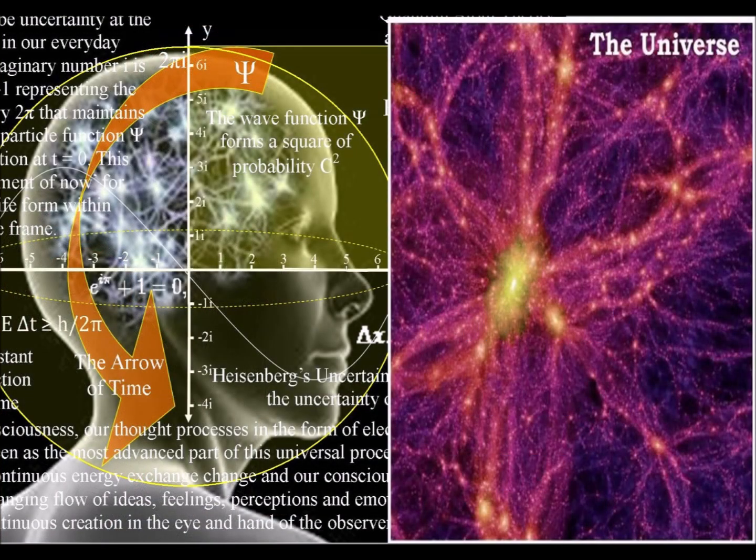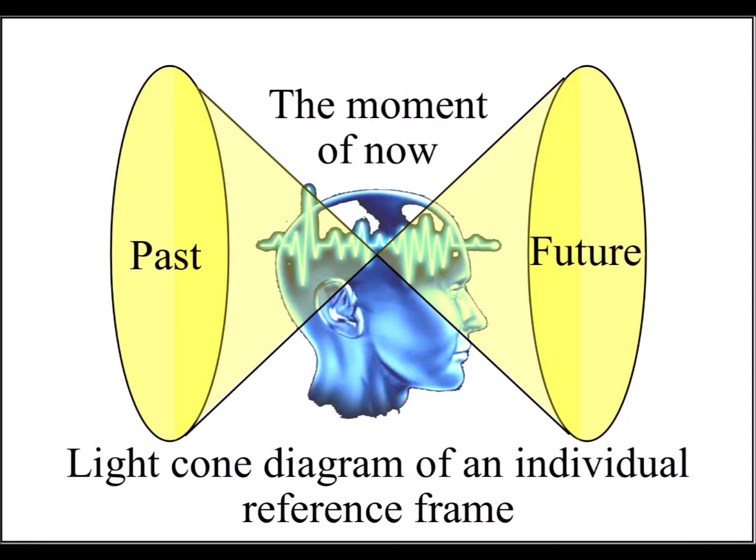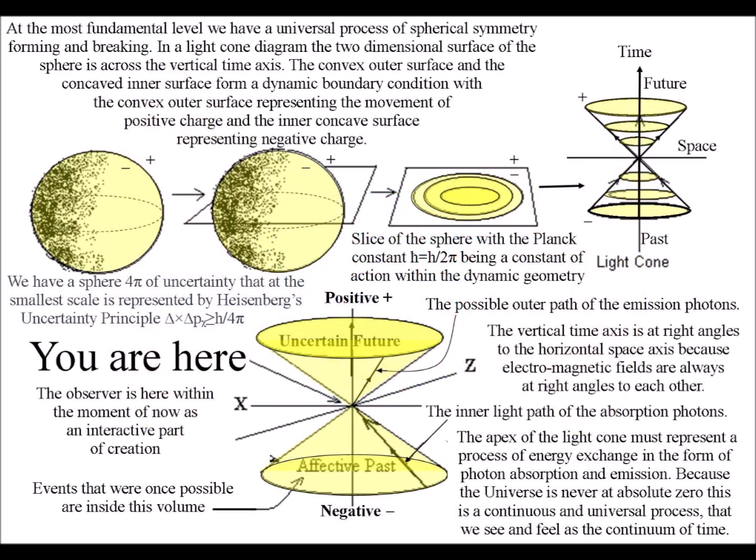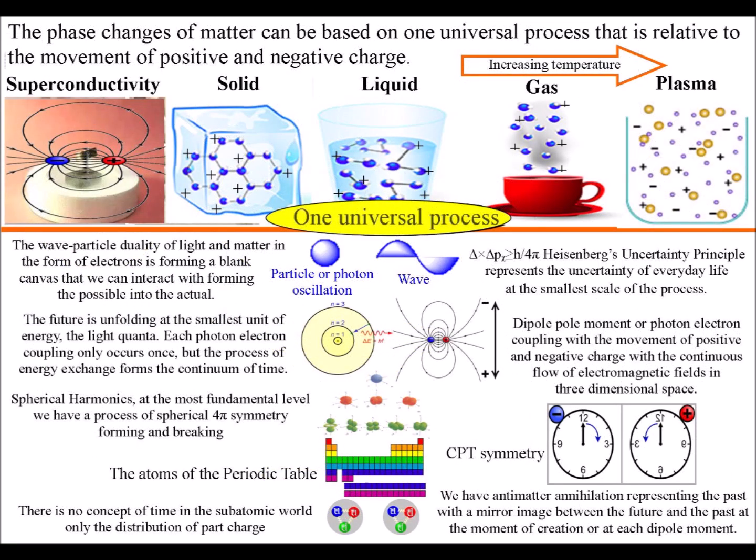In the theory explained in these videos, consciousness is the most advanced part of a universal process. This is a process of energy exchange formed by electromagnetic activity and the movement of charge. Charge is an innate part of all matter, therefore the electromagnetic activity in the brain that forms consciousness is universal.